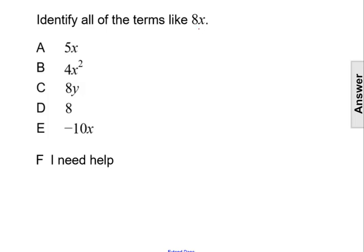This expression 8x has the variable x raised to the first. So looking at our answer choices, we automatically can eliminate choice C because that has a variable of y, and we can eliminate choice D because that does not have a variable at all. It has to have a variable of x.